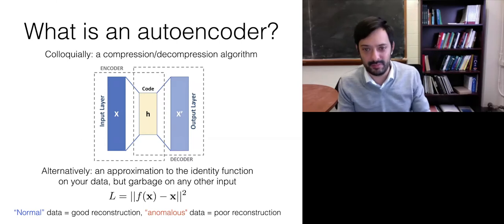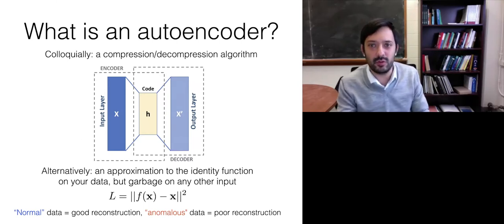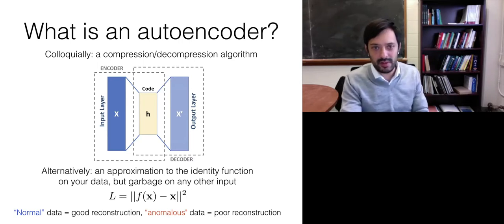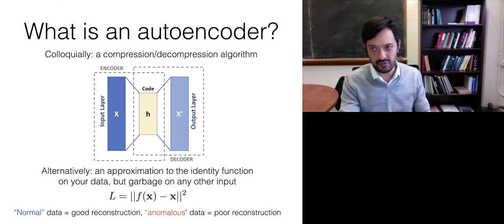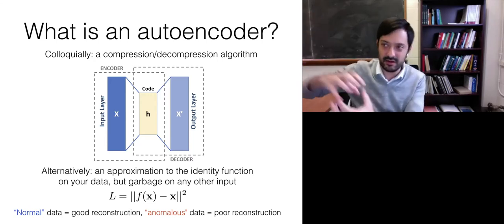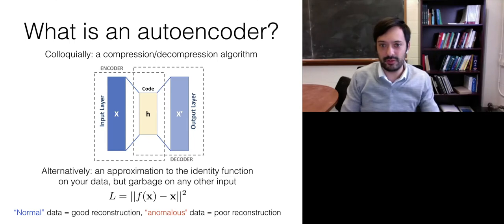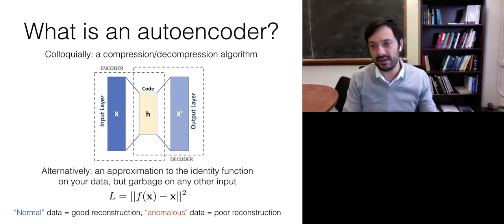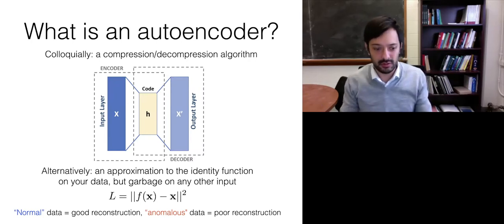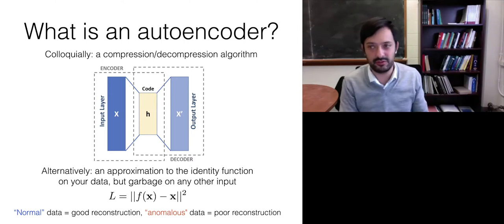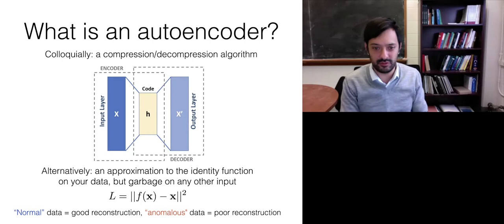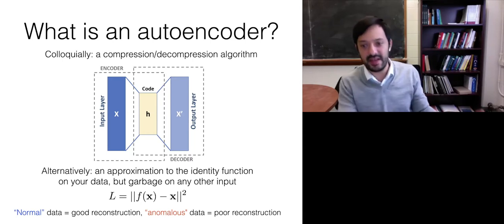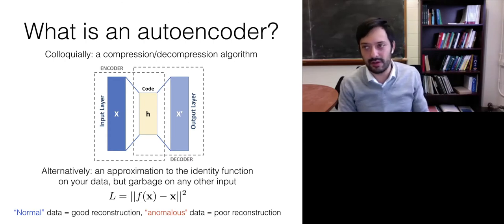I'm going to skip a lot of the background because he did it so beautifully last week. So first, let me define what I mean by an autoencoder. Colloquially, it's just some kind of compression and decompression algorithm. You have some data embedded in some high dimensional space, you compress it to learn its essential features, and then you uncompress it again and see what you get. The goal is for the decompression to be as good as possible on your data, but as bad as possible on any other input that lives in the same ambient space. So an autoencoder is supposed to approximate the identity function on your data, but give you garbage on any other input. You can measure that with a loss function which is just the output of the autoencoder minus the data itself — the data is the label you're trying to learn.